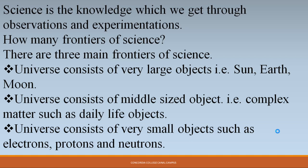How many frontiers of science are there? There are three main frontiers of science. The universe consists of very large objects — such as the sun, earth, and moon. It also consists of middle-sized objects, called complex matter. In our daily life, all the objects we see — like a board, a marker, a chair, a table — are middle-sized objects; not very large and not very small.